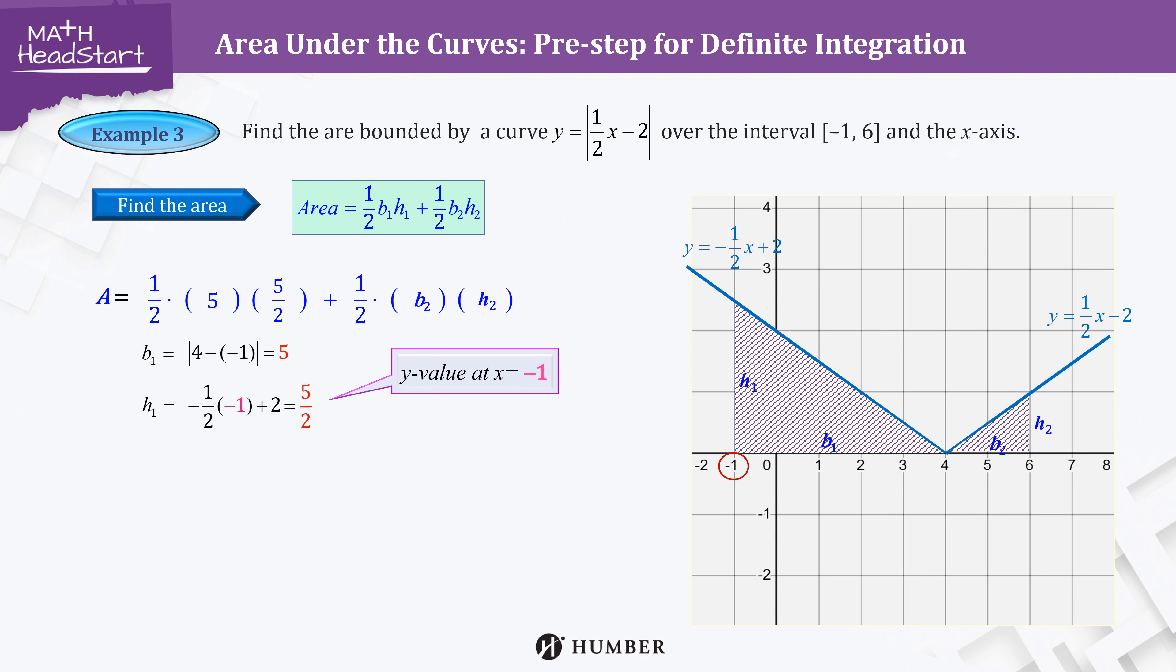Similarly, the base of the right triangle is the distance of two coordinates, 4 and 6, which is 2, and the height is the y-value at x = 6. So we substitute 6 into y = 1/2x - 2 to get 1.